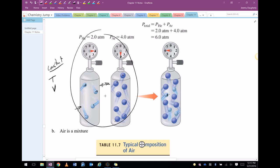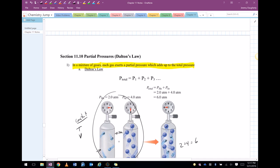If I were to mix those two into the same container, I still have four particles exerting its two atmospheres of pressure. I still have eight particles exerting its four atmospheres of pressure, so the total pressure is six atmospheres.